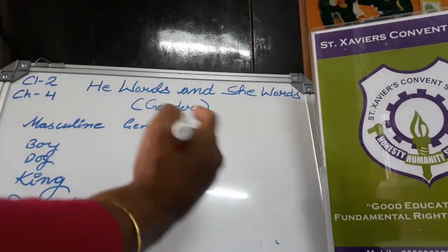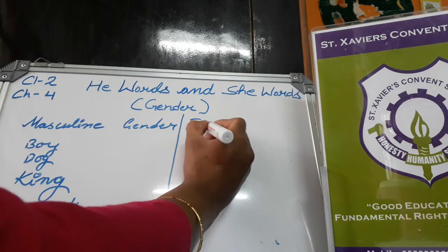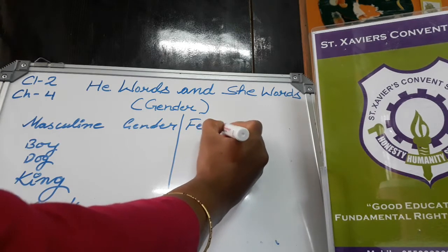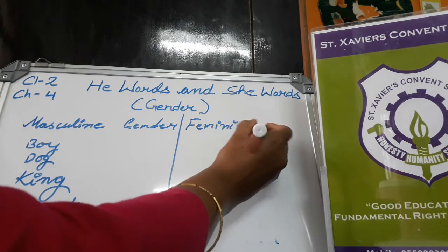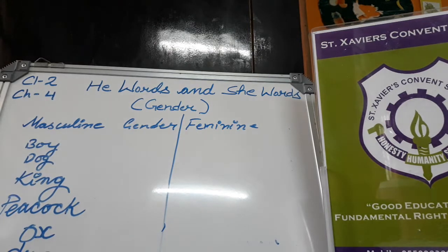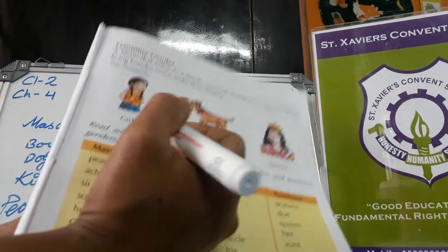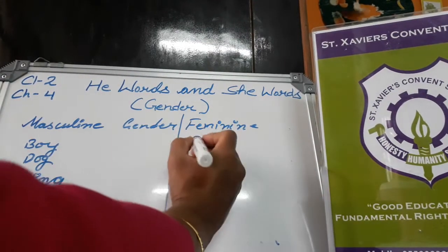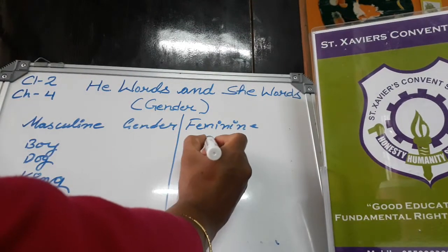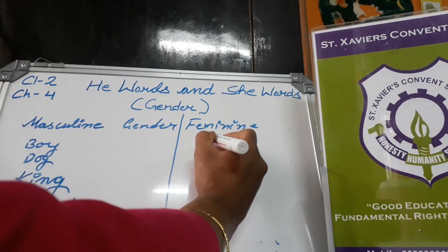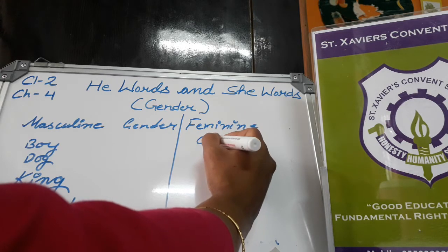A noun that refers to a female is known as feminine gender. All living females come under this category. The opposite of boy is girl — the female feminine gender is girl.